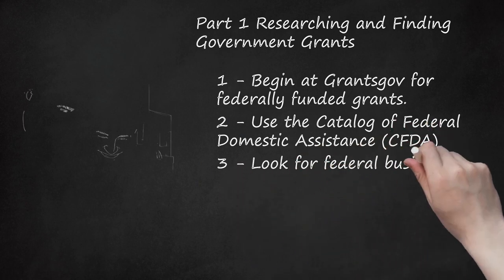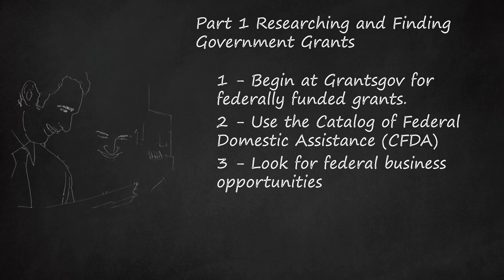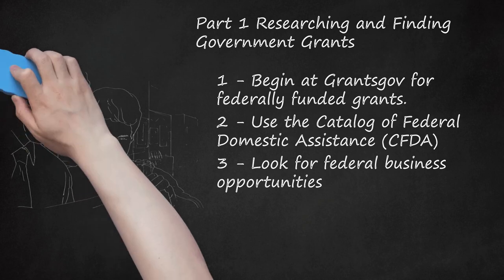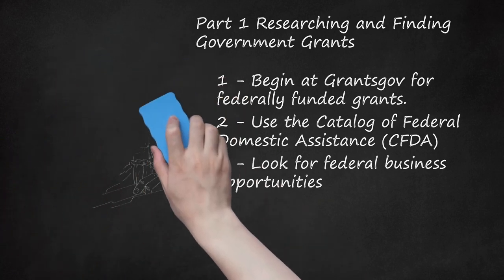Step 3: Look for Federal Business Opportunities. In addition to the grants listed at cfda.gov, you can find information on federal business opportunities at fbo.gov. This site contains information on grants as well as contractual opportunities through federal offices or agencies. You can perform a search by key terms, including such limiting factors as your state or location, the date of the posting, or the agency offering the opportunity. For example, a search for the key term "music" within the past 90 days results in a list of 118 grants or other opportunities, including such things as Protestant music director, music instruments for Guam High School, and music therapy for children at U.S. facilities in Germany.